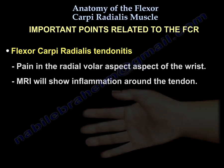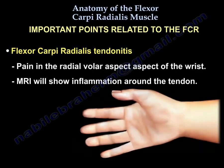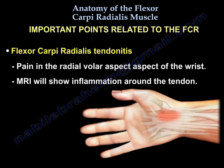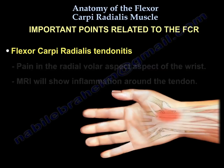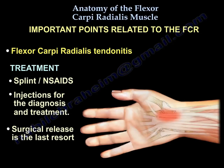Presentation includes pain in the radial volar aspect of the wrist. An MRI will show inflammation around the tendon. Treatment: number one is splinting and non-steroidal medication; number two is injection for diagnosis and treatment.